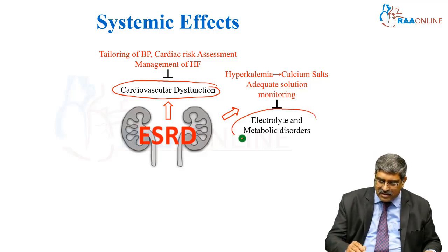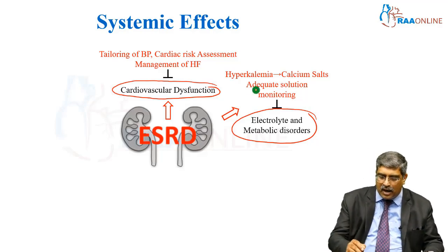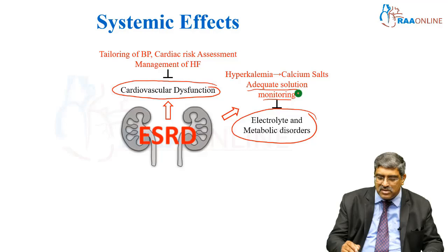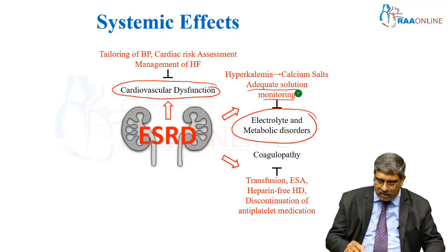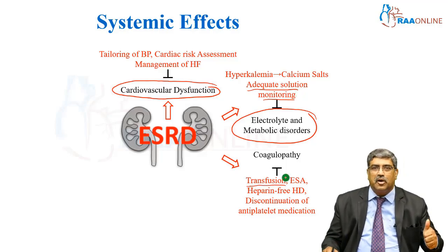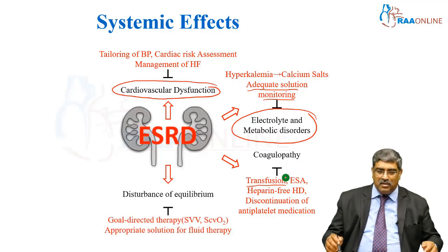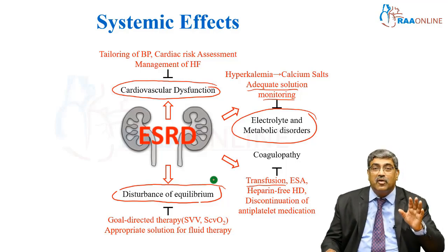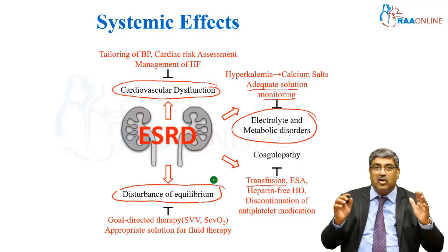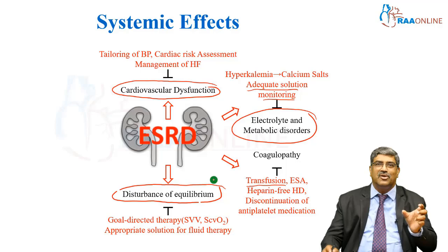When there are electrolyte and metabolic disorders, hyperkalemia can be countered with calcium salts, and the most important thing is intravascular volume management. For coagulopathy, you can go with transfusion, erythropoietin-stimulating agents, heparin-free hemodialysis, discontinuation of anti-platelet medication, and management of disturbance of body equilibrium. Here you have to go with goal-directed therapy, stroke volume variation or mixed venous oxygen saturation, and use appropriate solution for fluid.